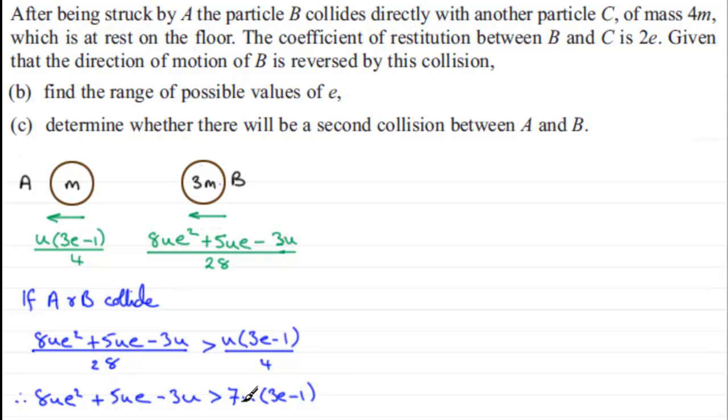Now there's a u in every term, so I can just divide through by u. Take that one out. And if we now just expand and simplify this, what do we get? Well, we've got 8e squared and then plus 5e minus 3.